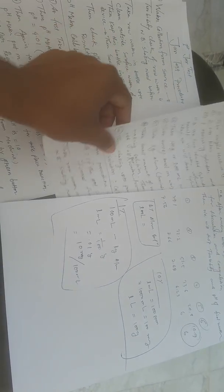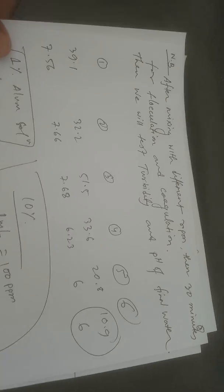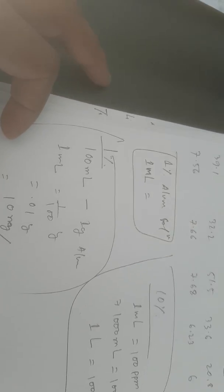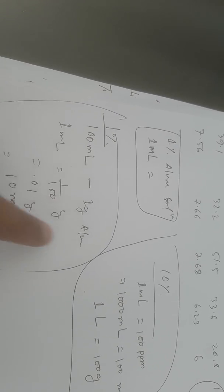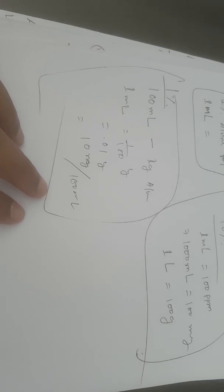This jar test is a very important test for all water treatment plant engineers. Detention time is variable depending on structure size. As a reference: for a 10% solution, 1 mL = 100 ppm; for a 1% solution, 100 mL of solution contains 1 gram of alum, so 1 mL = 0.01 gram = 10 ppm.